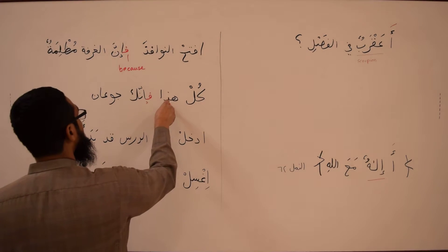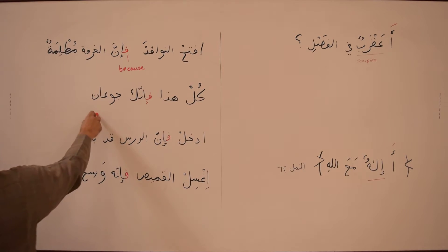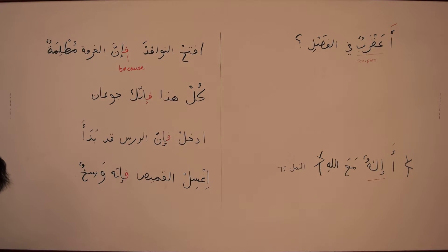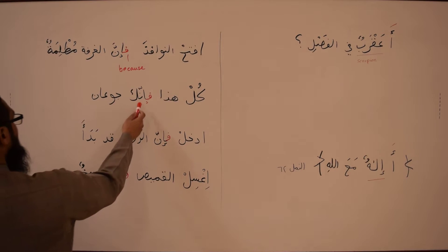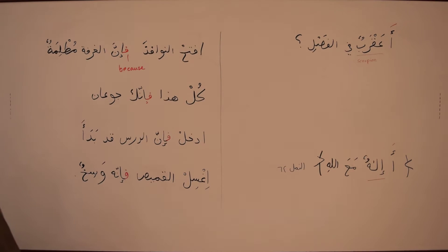'Qul hatha' — 'Eat this' — 'Fa inna ka jau'an' — 'Because you are hungry.' 'Fa inna ka' uses inna for emphasis, so it means: 'Because for sure you are hungry.'